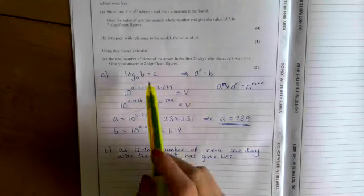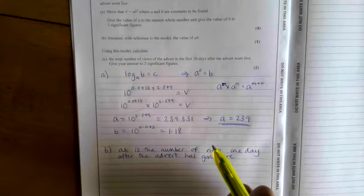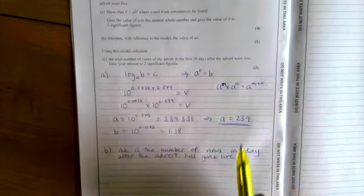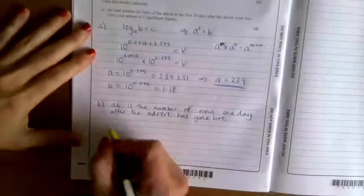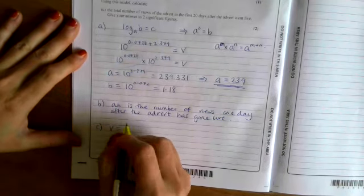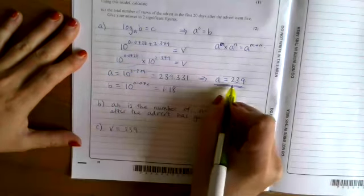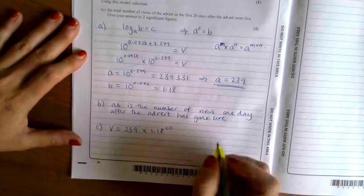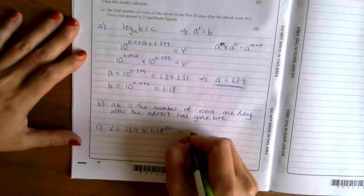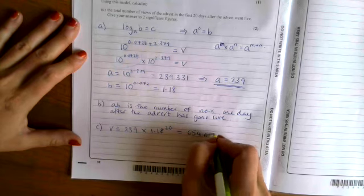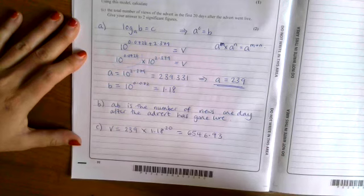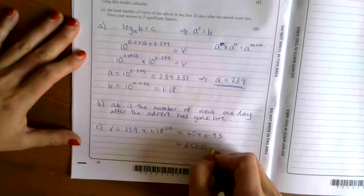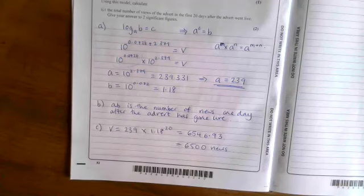And then part C says, using this model, calculate the total number of views of the advert in the first 20 days after the advert went live. So that is when T is equal to 20. For that one, I'm just going to substitute T equals 20. 239, I've got this from up here, times 1.18 to the power of 20. So I put that in my calculator. It's back, but it wants it to two significant figures. So that would be 6,500 views. So that's question eight done.